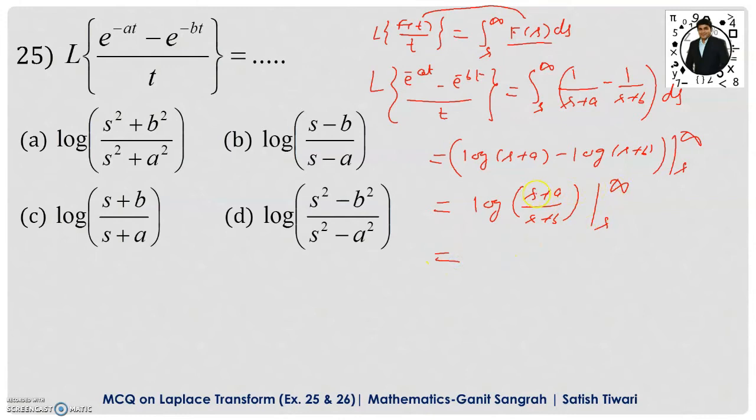Now, put the infinity here. We cannot put the infinity directly because it will become infinity upon infinity. So, what we do here? I take the s common from here, s common from here, s will get cancelled. This will be then 1 plus a by s, 1 plus b by s and if I put the infinity, a by infinity and b by infinity is what? Zero. 1 is left here and log 1 is what? Zero.